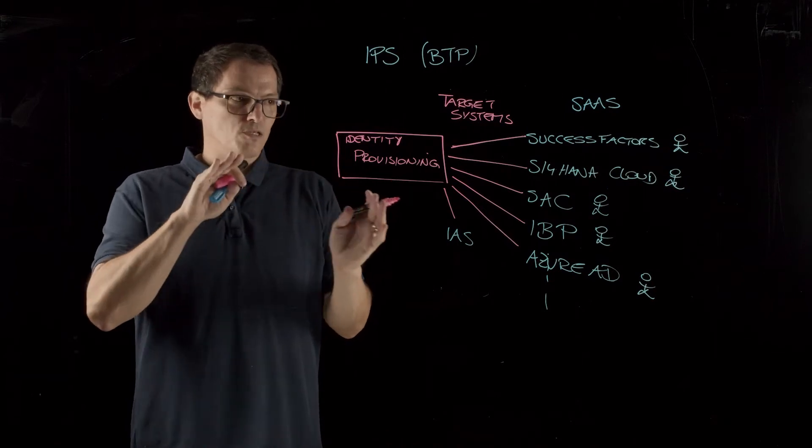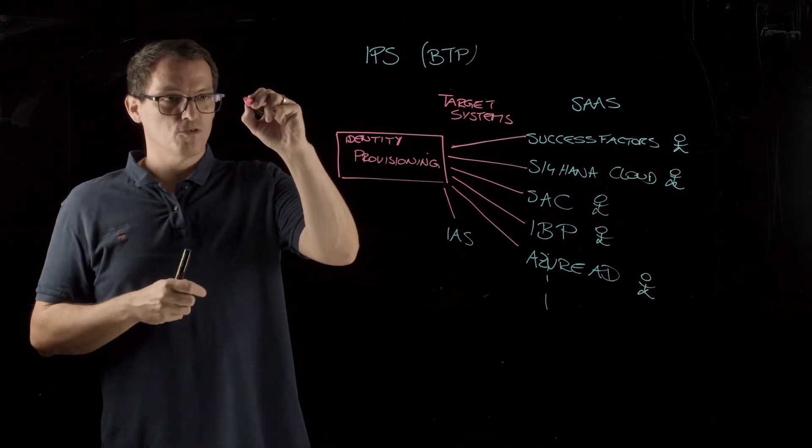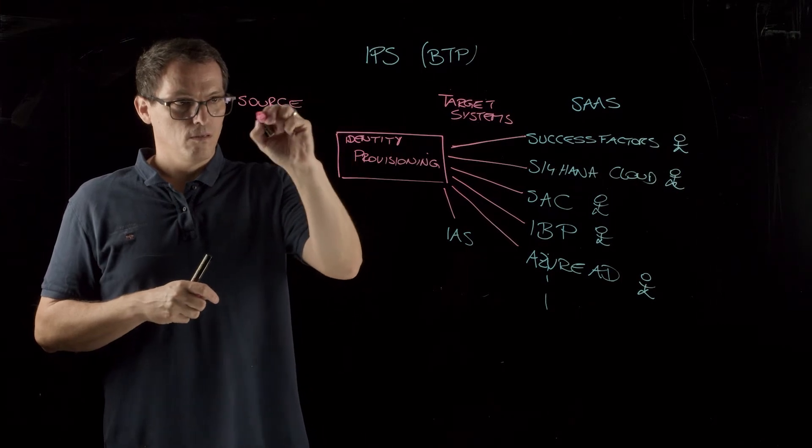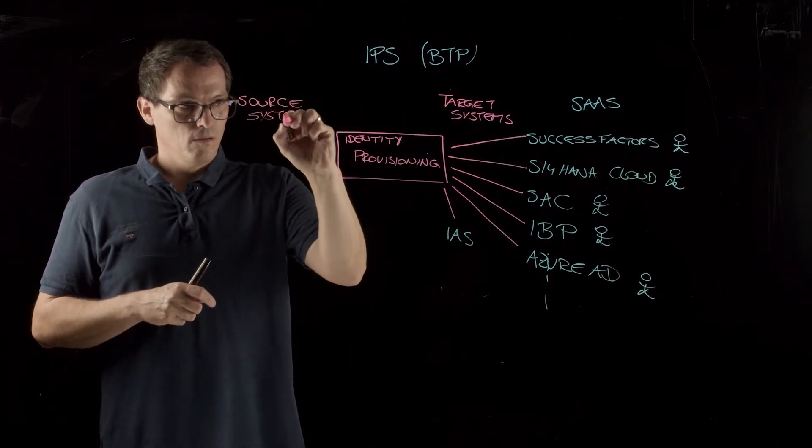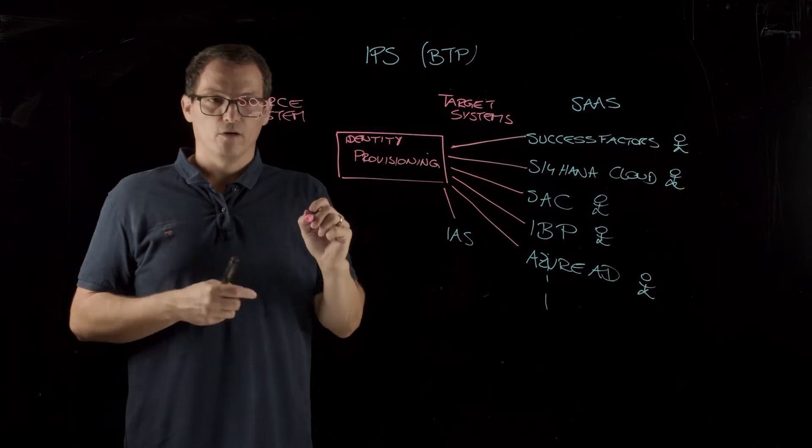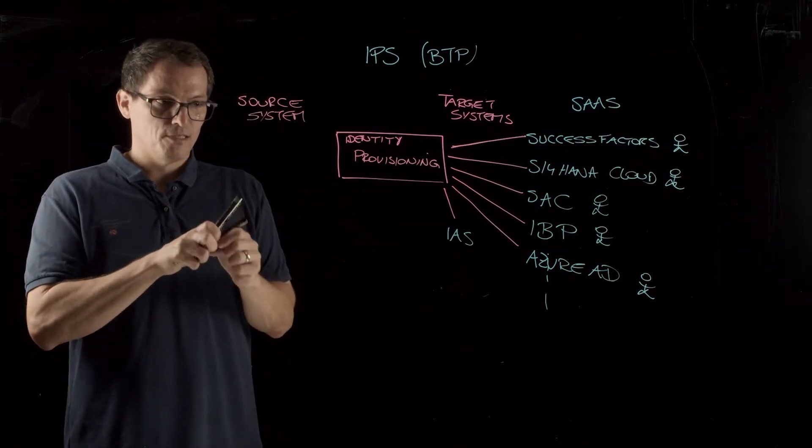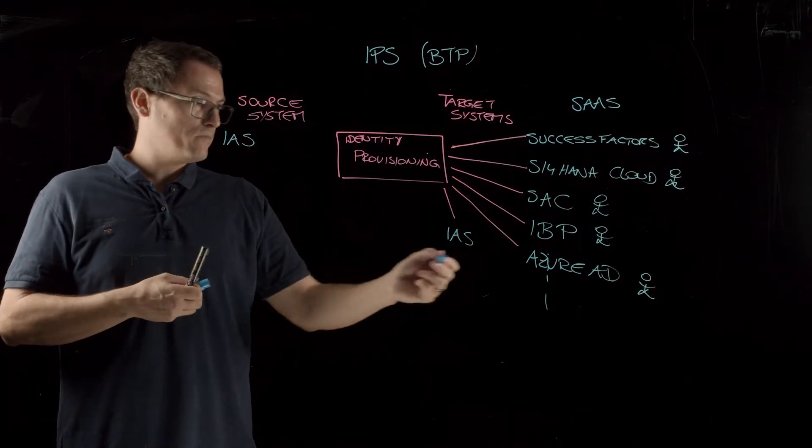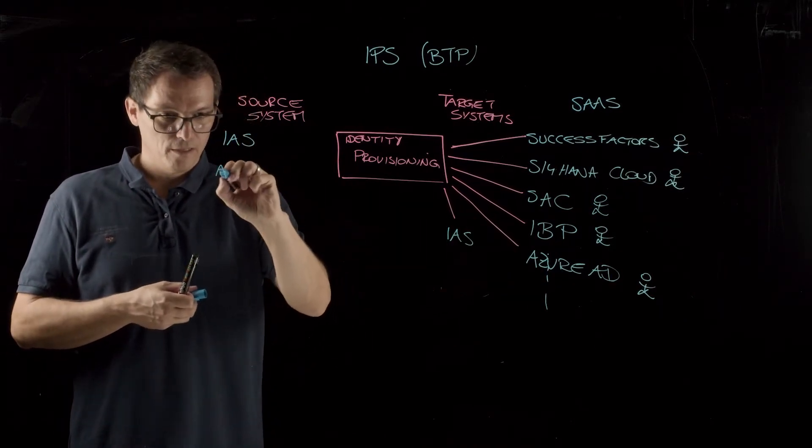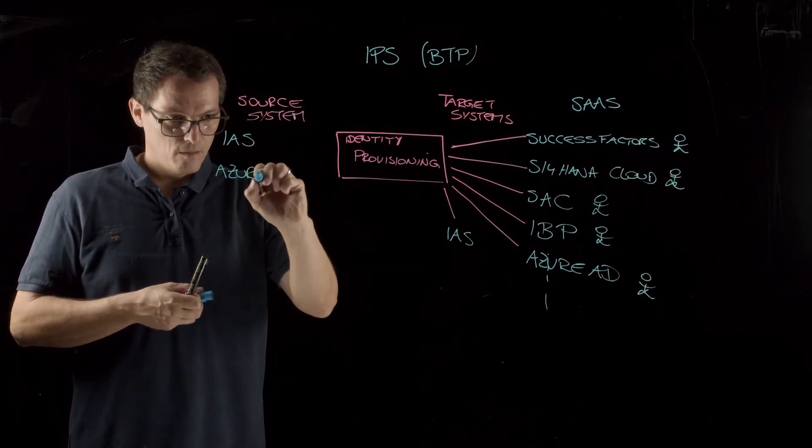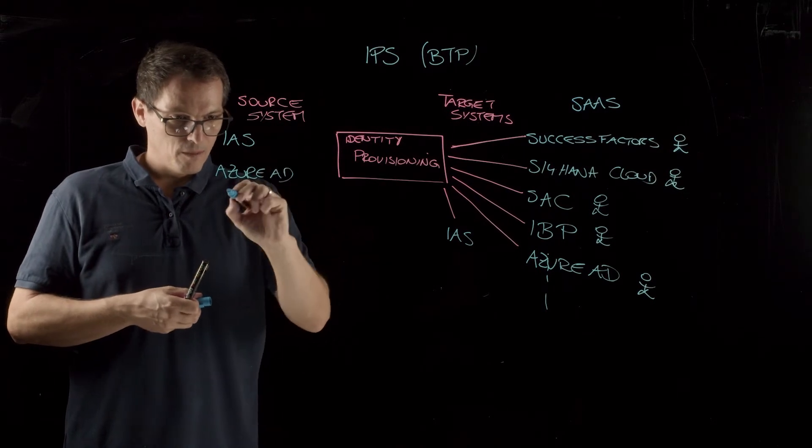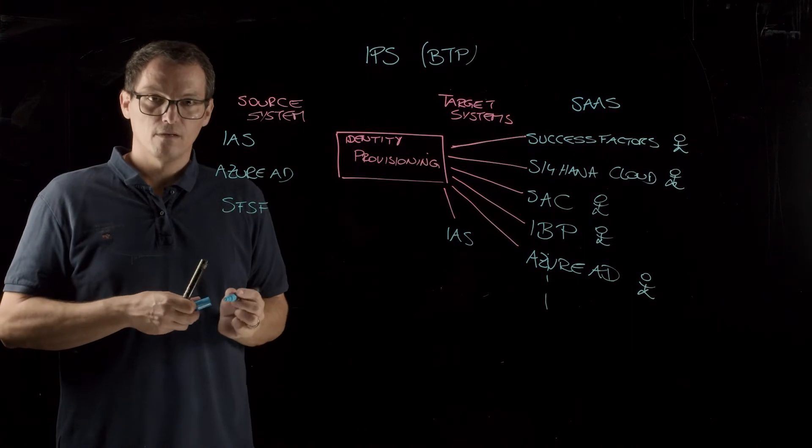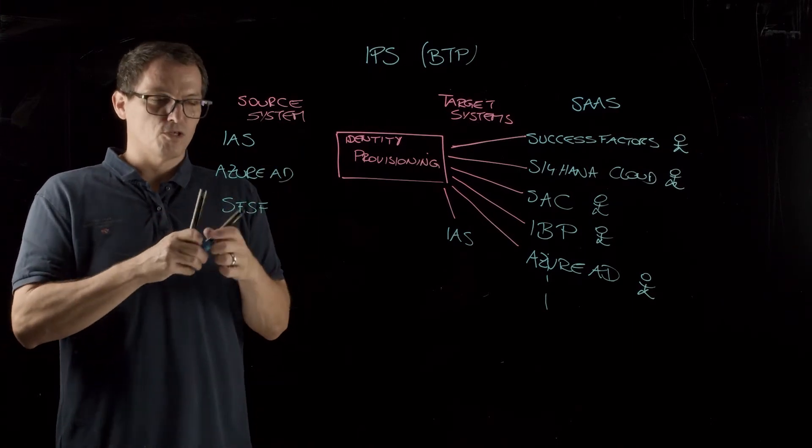On the other hand, we need a source of information. So we need a so-called source system, which can, in our case, be the identity authentication service, the IAS. It can be Azure Active Directory. It can be SuccessFactors, the abbreviation is SFSF. So these could be the source systems.